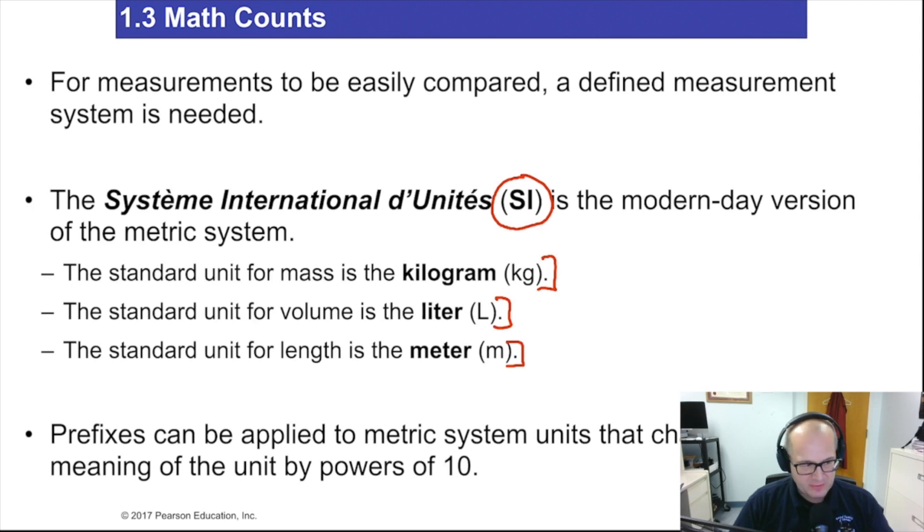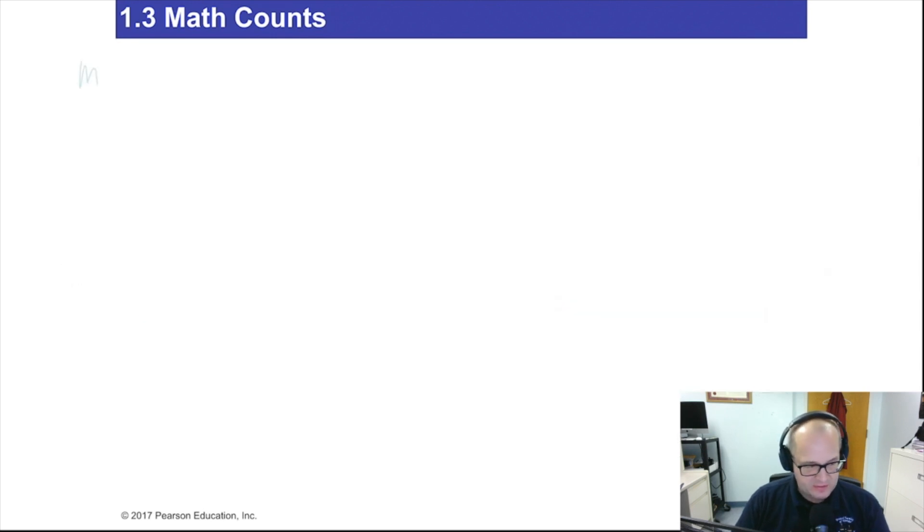There are differences, but don't even worry about those. Now the metric system is great because it uses prefixes to define the unit. We know a base unit. For example, if we look at this table, just set up a little table for us. So let's say we have mass. Base unit is gram. We have length. Base unit is meter. And the last thing is volume. Base unit is liter.